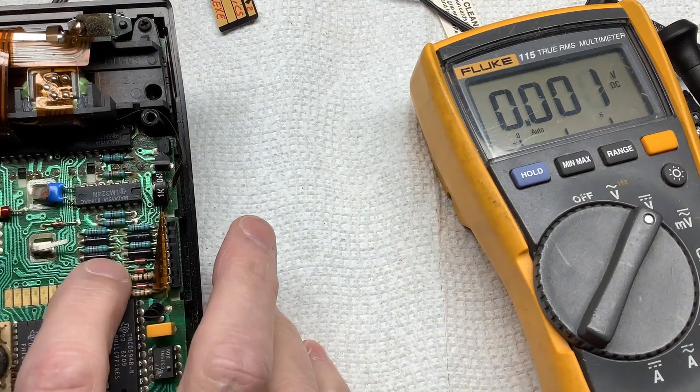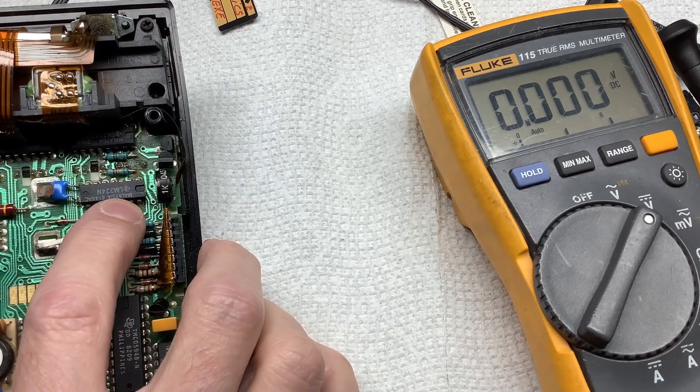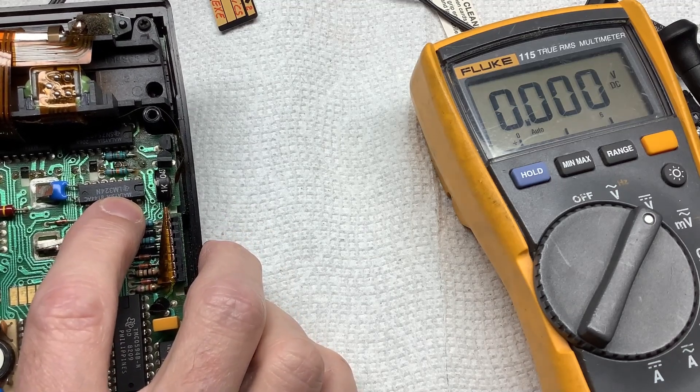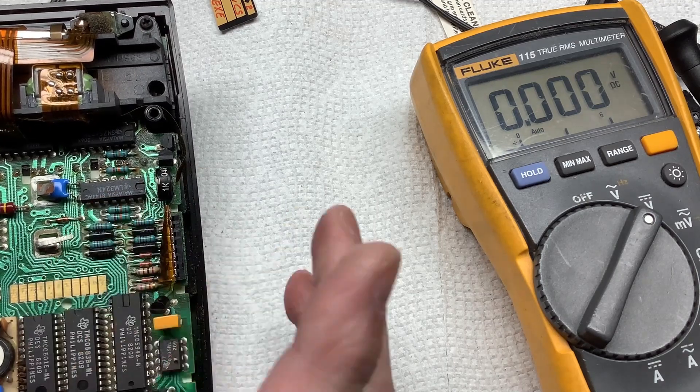Also what can happen when these go bad depending upon what occurs, it can also take out this chip. The chip is readily available still today, real easy to get from anywhere, real cheap. It's a LM324 real straightforward.